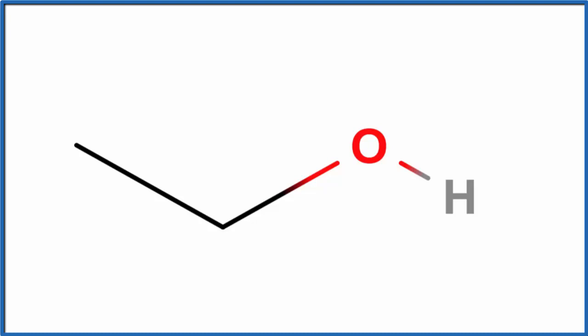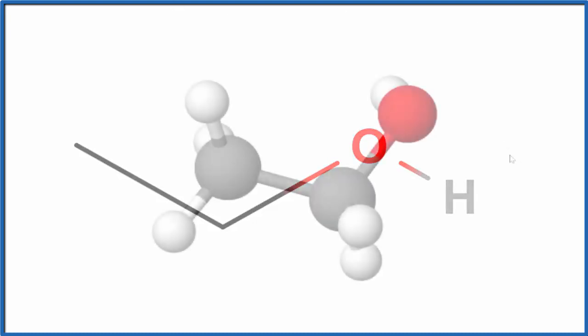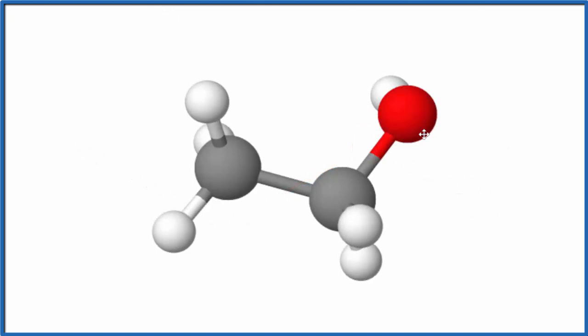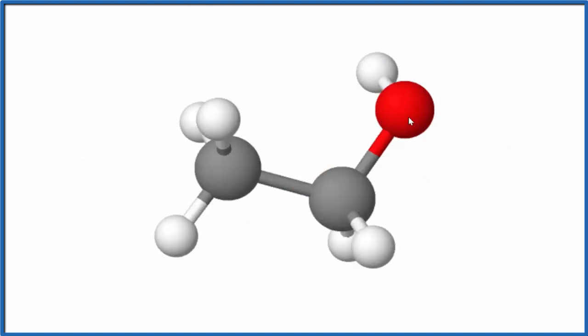If we looked at the structure, the molecular structure in three dimensions though, we'd have this oxygen that's red bonded to the hydrogen. That's the OH group that makes it an alcohol. And then our two carbons and each carbon bonded to four things.